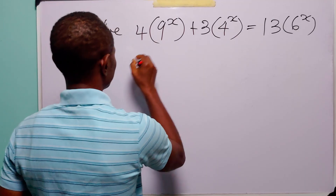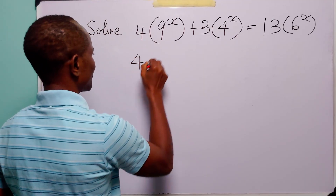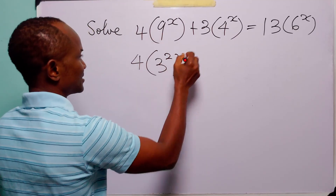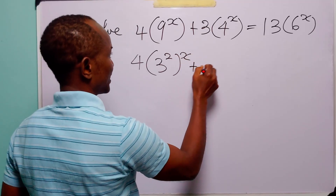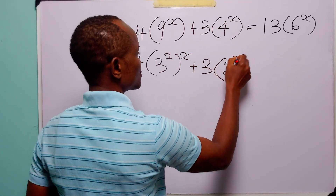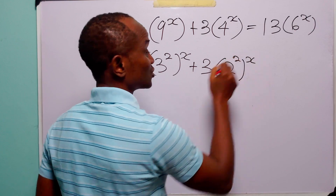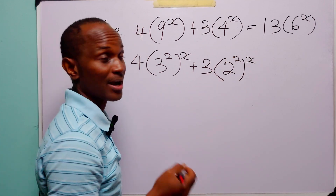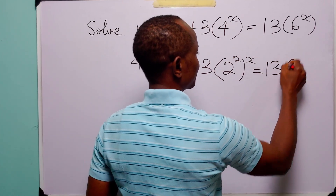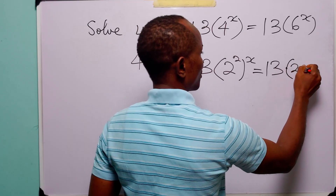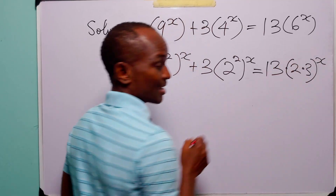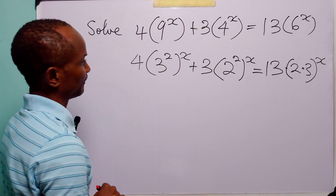Now we know that 9 is 3 squared, and this is raised to power x. 4 is 2 squared, and this is also raised to power x. And 6 is 2 times 3, and both numbers are raised to power 3.